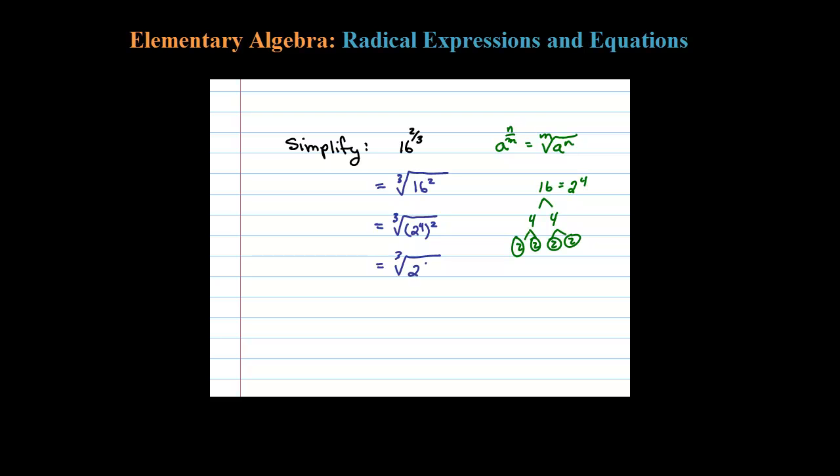Now in this form, it's going to be easier to take the cubed root. One way to consider this is as the cubed root of 2 to the 6 times 2 squared. When you do that, the cubed root of 2 to the 6th is 2 squared, and what's left inside the cubed root is 2 squared.